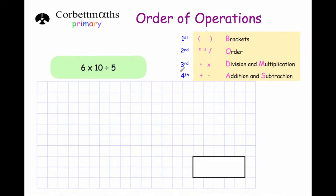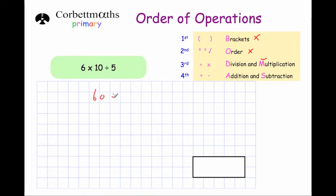Similarly, we've got 6 times 10 divided by 5. There are no brackets or squaring or cubing, and this question is all divisions and multiplications. Because it's divisions and multiplications, you work from left to right. So 6 times 10 is 60, and then we divide that by 5. 60 divided by 5 is 12, so the answer is 12.